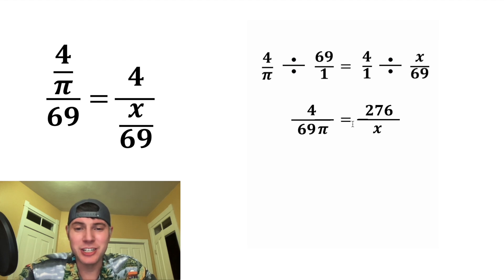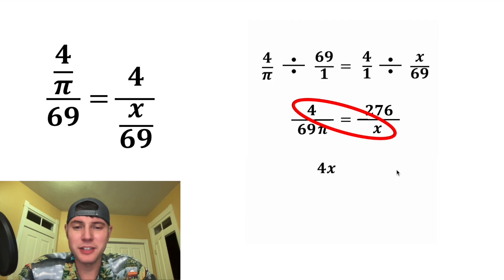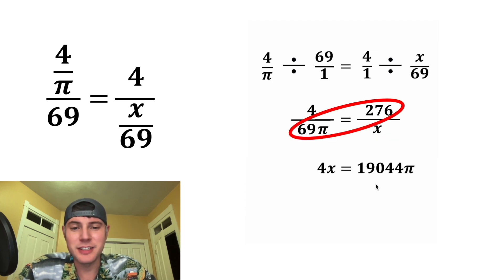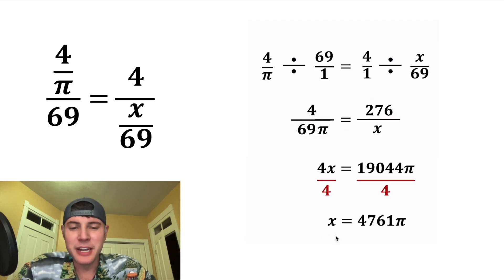Now we have a fraction equals a fraction. We can solve this by cross multiplying. Four times x equals 4x, and that's equal to 69 pi times 276, which is 19,044 pi. Then we can divide both sides by four, and we get x is equal to 4,761 pi.